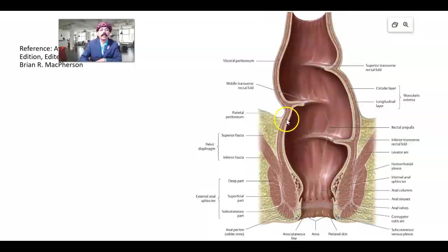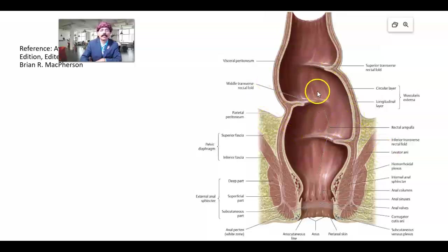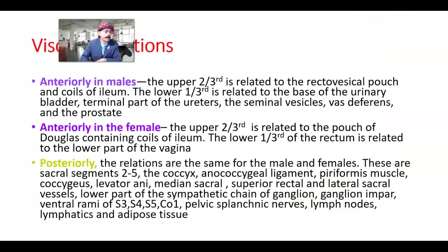Like other parts of the intestine, we have an inner circular layer and an outer longitudinal muscle layer. The lining is simple columnar epithelium with intestinal glands — like the crypts of Lieberkühn — as well as many unicellular goblet cells lining the epithelium of the rectum.